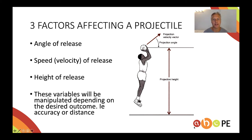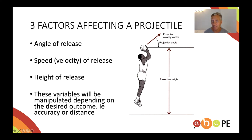My good friend here — the basketballer — who is probably trying to get that ball into a hoop, his objective is not to throw the projectile as far as possible. So don't get sucked into thinking that it's always about how far we need to throw the projectile, because sometimes it's about accuracy.